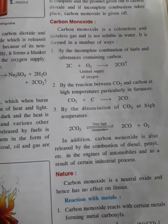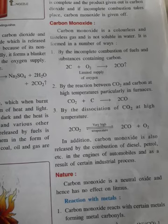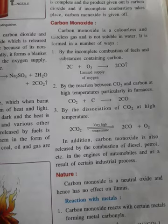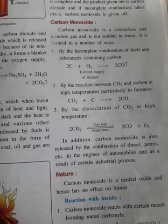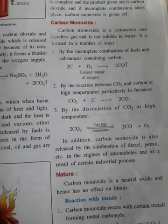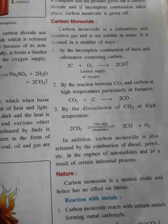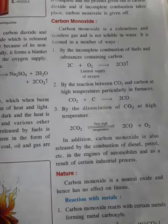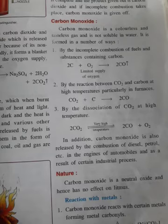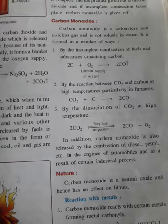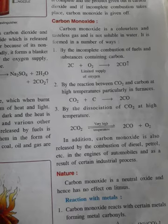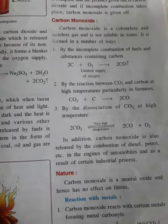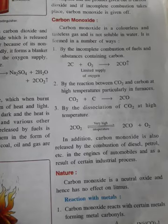Now we will see the harmful effects of carbon monoxide. As mentioned, it is a highly poisonous gas. When carbon monoxide is inhaled, it passes through the lungs into the blood, where it reacts with the respiratory pigment hemoglobin of RBCs and forms a stable compound called carboxyhemoglobin. This reduces the oxygen-carrying capacity of hemoglobin, which may cause suffocation and will ultimately lead to death.